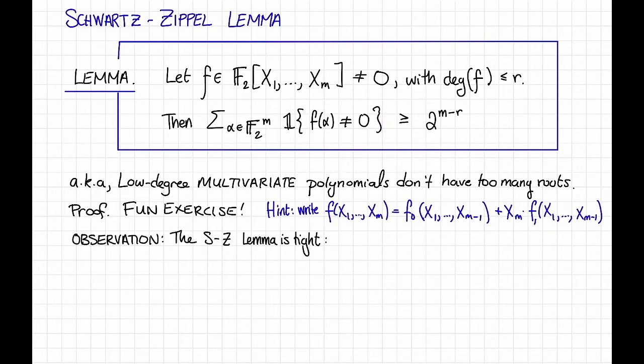To see that this is tight, consider the polynomial F of X1 dot-dot-dot up to XM which is just equal to the product of the first R of these variables X1 X2 dot-dot-dot up to XR. Observe that this polynomial is non-zero if and only if X1 up through XR are all equal to 1, and then the remaining M minus R variables can be whatever they want. So that's 2 to the M minus R possibilities so that this thing is non-zero.